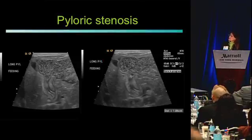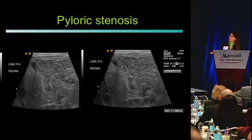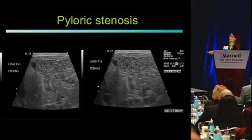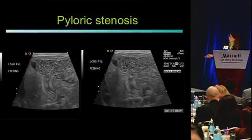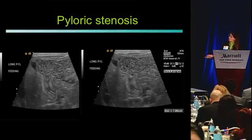Here's an example of a positive study, after the baby has been given Pedialyte. You can see bubbly fluid in the stomach transitioning into a thickened, abnormal, echogenic, elongated pylorus. The muscle wall is measuring more than three millimeters, the channel length was almost 19 millimeters — too long — and after feeding we saw almost nothing going through the pylorus. A positive study.